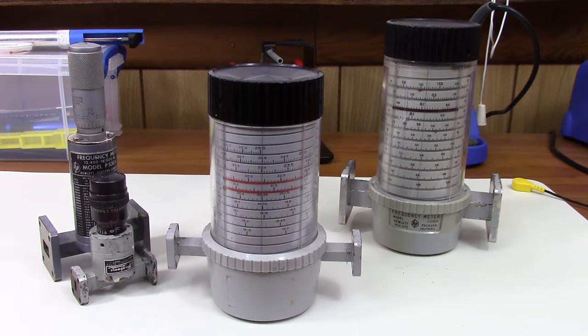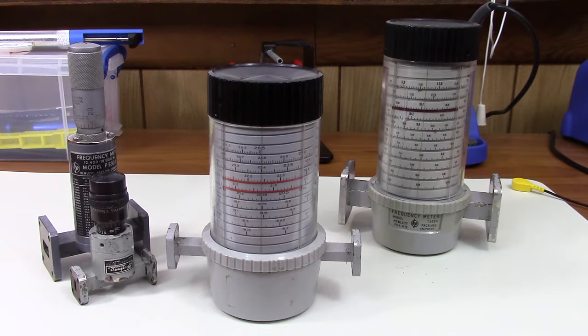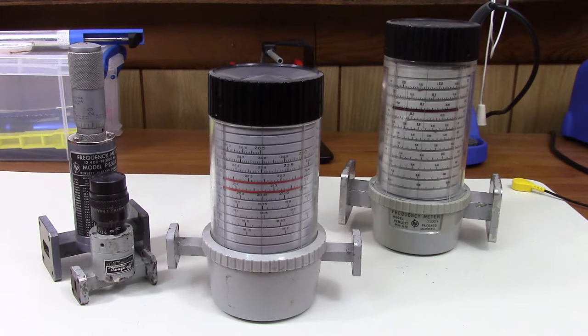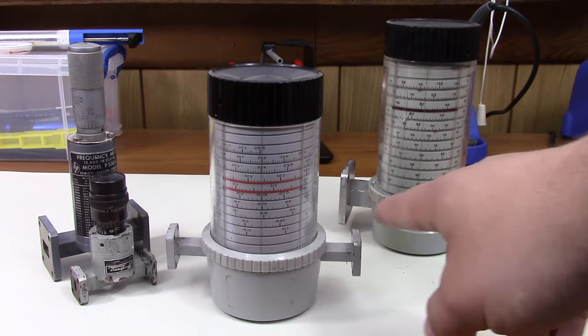They're capable of measuring high frequencies in the gigahertz range. There are versions that go as low as 2 gigahertz roundabout, and they have coaxial connectors. The ones I got here have waveguide connectors which usually indicates they're destined for very high frequency.